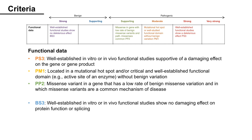Next, Functional Data: PS3 is for variants with well-established in vitro or in vivo functional studies supportive of a damaging effect on the gene or gene product. PM1 is for variants located in a mutational hotspot and critical in a well-established functional domain without benign variation. PP2 is for missense variants in a gene that has a low rate of benign missense variation and in which missense variants are a common mechanism of disease. BS3 is for variants with well-established in vitro or in vivo functional studies showing no damaging effect on protein function or splicing.